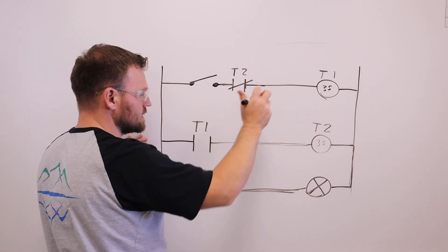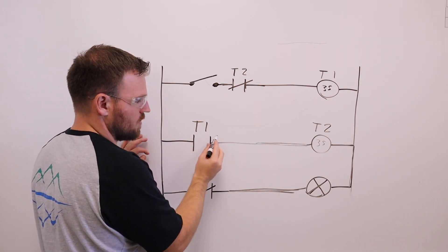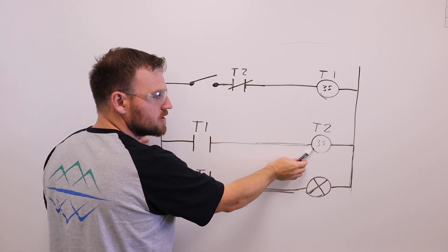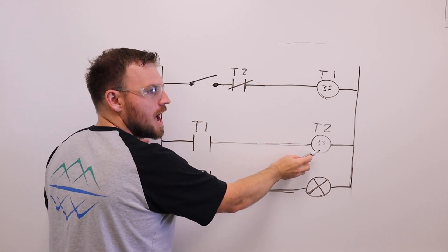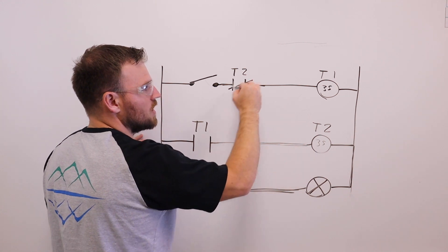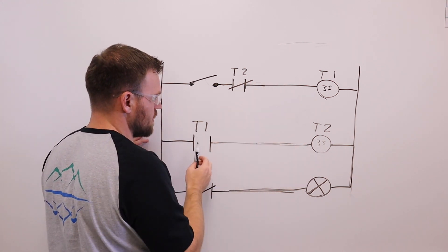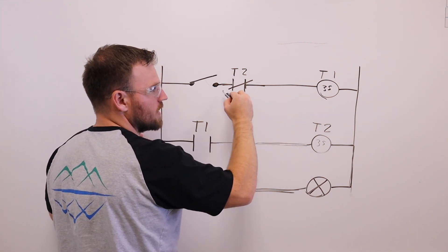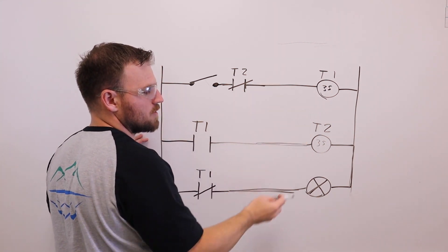What's going to happen is after three seconds, this timer 1 coil over here or contact is going to close. It's going to energize T2. After T2 times out, it's going to close or open this one here, which will then turn around and open this one. And then it will restart or it will close this one and then restart timer 1.